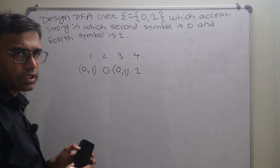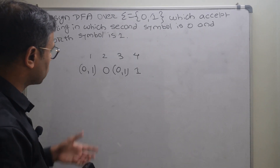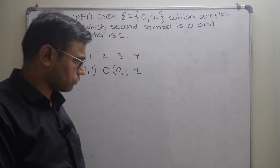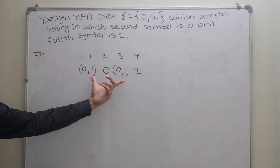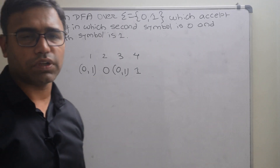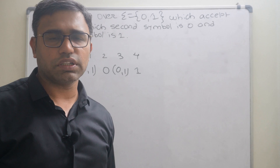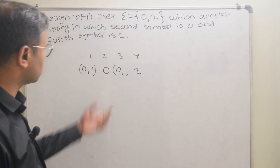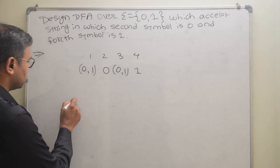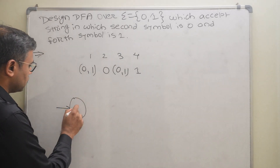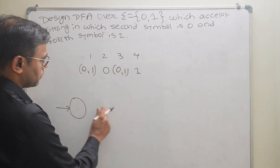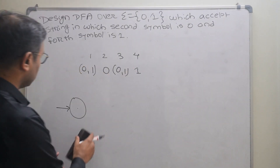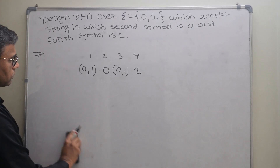According to that, what can be the minimum number of states? Since the minimum length is 4, there should be 5 states including the initial state. The reason is it is accepting the first symbol, so initially there will be an initial state and then 4 more states accepting 4 symbols — that's why there will be 5 states total.